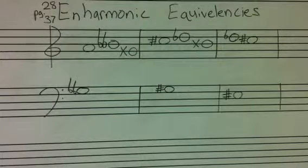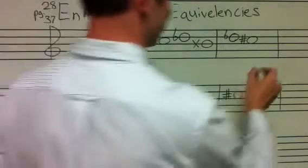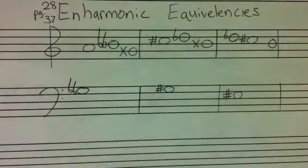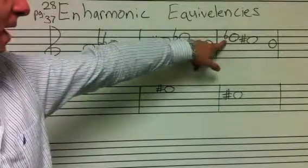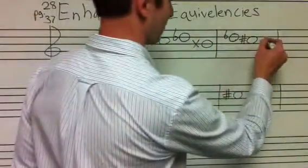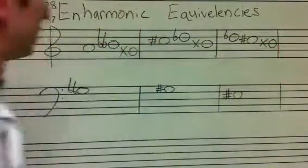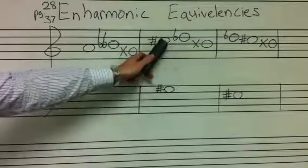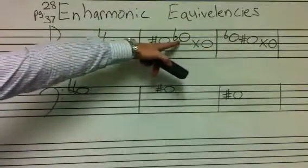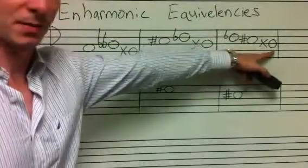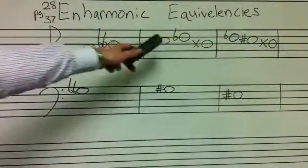C-sharp and D-flat are the same. Could we use a B? Yes, we could. B double-sharp also lands on D-flat or C-sharp. So we have C-sharp, D-flat, and B double-sharp — they all share the same pitch, just starting from a different note.